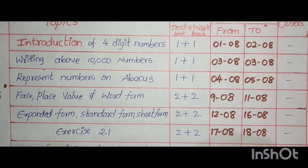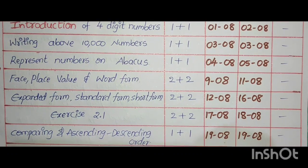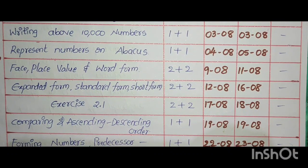Writing Above 10,000 Numbers, 1 plus 1, August 3 to August 3. Represent Numbers on Abacus, 1 plus 1, August 4 to August 5.